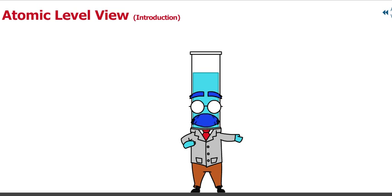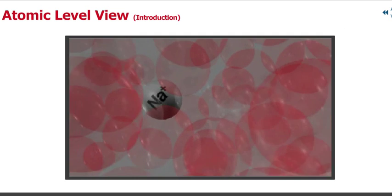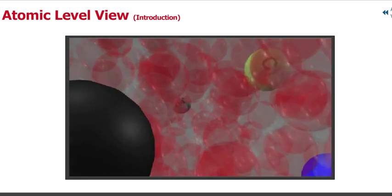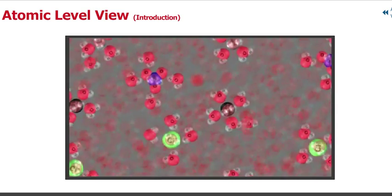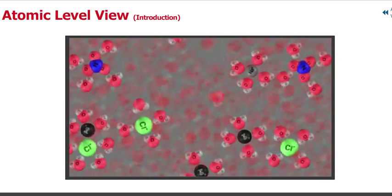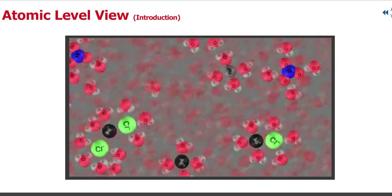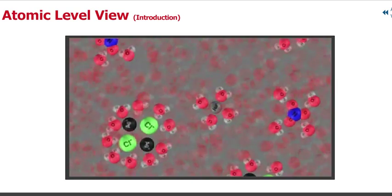In this section, we'll look at animations that model atomic level views of aqueous sodium chloride reacting with aqueous silver nitrate to form a precipitate. First, we'll see an introductory animation that shows the very complex nature of a precipitation reaction.